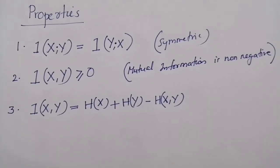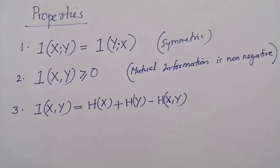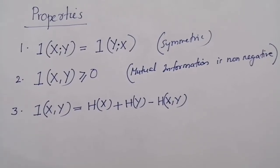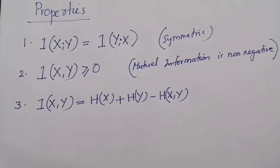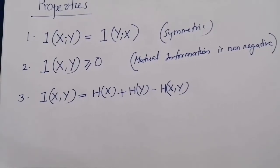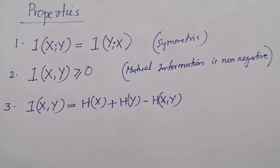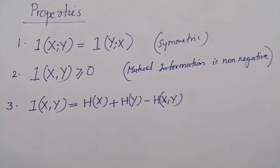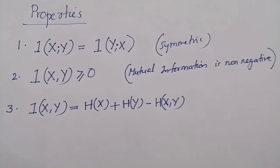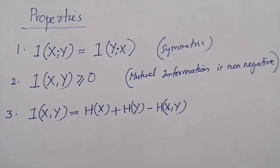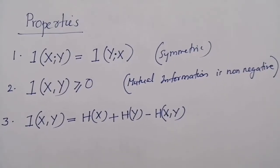Generally, you will gain some information about the channel input if you observe the channel output. The second property says that even on a noisy channel, you will not lose any information by observing the output of the channel. At most, mutual information may be zero, which indicates that you don't gain any information by observing the output — and this happens when the input and output symbols of the channel are statistically independent.